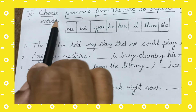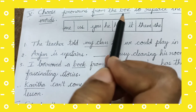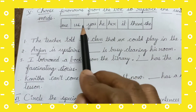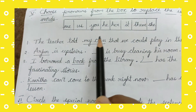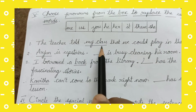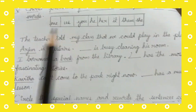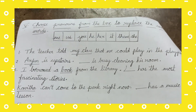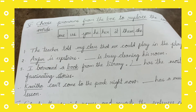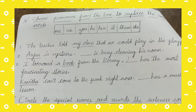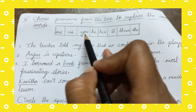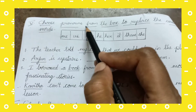Roman 5: Choose pronouns from the box to replace the underlined words. Here I have given some pronouns. You have to choose and replace the underlined word with the given pronoun. We already learned in our previous classes what is a pronoun — in place of noun we use pronoun.